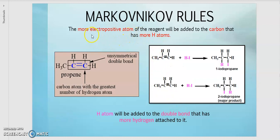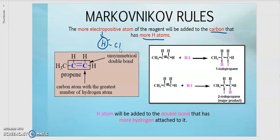So for Markovnikov rules — what are the Markovnikov rules? Markovnikov rules state that the more electropositive atom of the reagent will be added to the carbon that has more hydrogen atoms. For example, with H and Cl, the electronegativity differs between atoms. H is more electropositive, Cl is more electronegative. So hydrogen, being more electropositive, will attach to the carbon that has more H atoms.